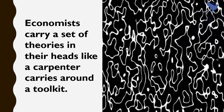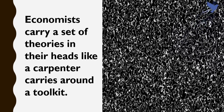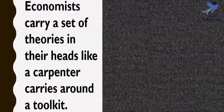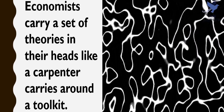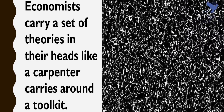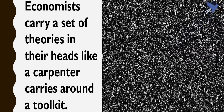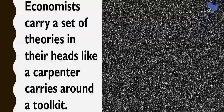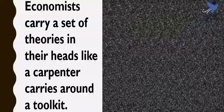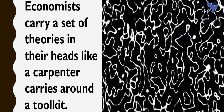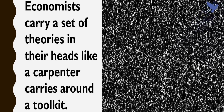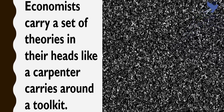Economists carry a set of theories in mind like carpenters carry around a toolkit. When they see an economic issue or problem, they go through the theories they know to see if they can find one that fits. Then they use the theory to drive insights about the issue or problem. In economics, theories are expressed as diagrams, graphs, or even as mathematical equations.